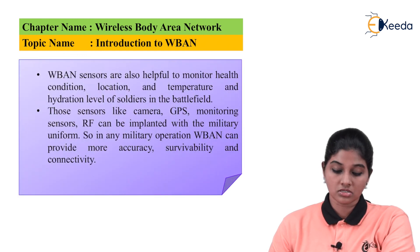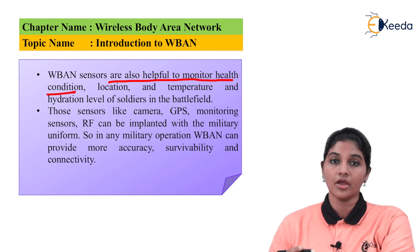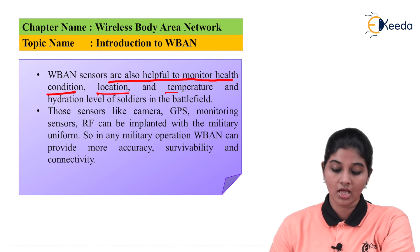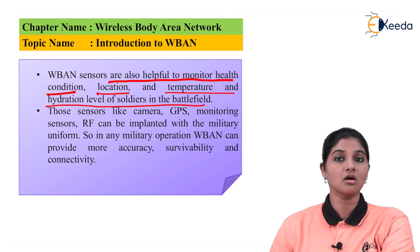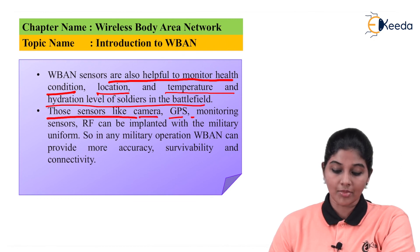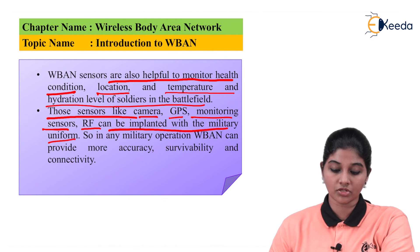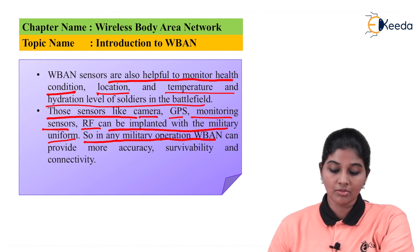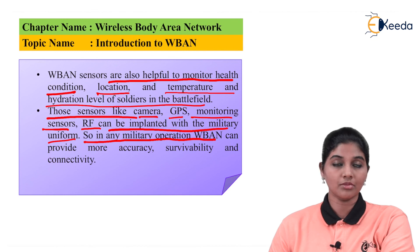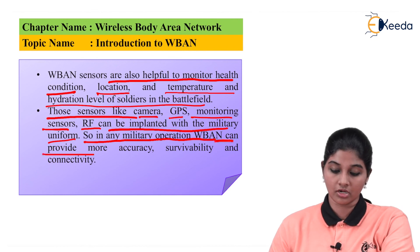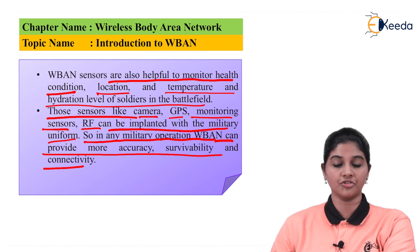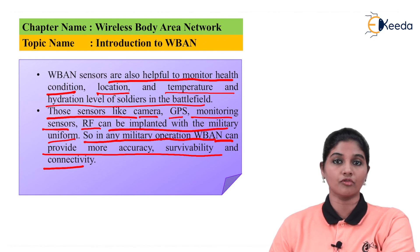Wireless body area sensors are helpful to monitor the health condition of soldiers. It is also possible to monitor their location, temperature, and hydration levels in the battlefield. Sensors like cameras, GPS monitoring sensors, and RF can be implemented within military uniforms, providing more accurate and efficient connectivity and survivability of soldiers in any military operation.